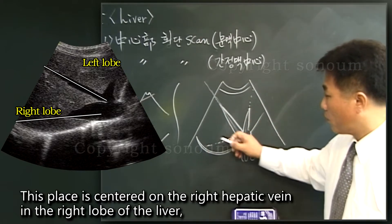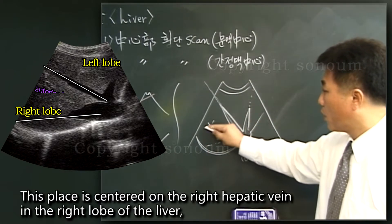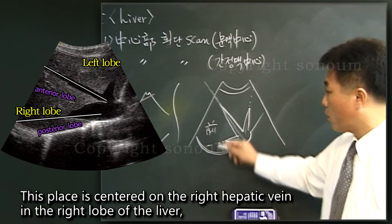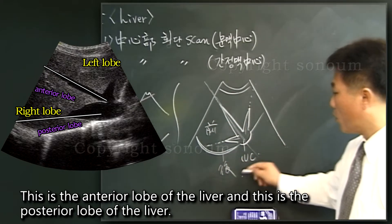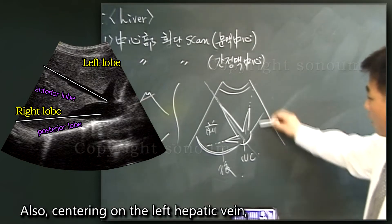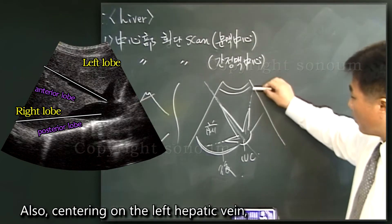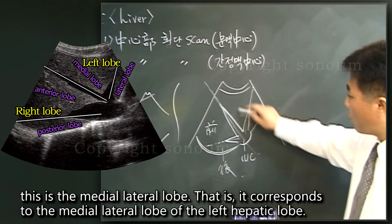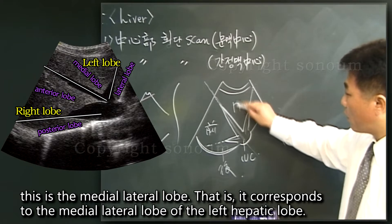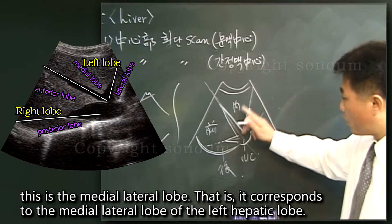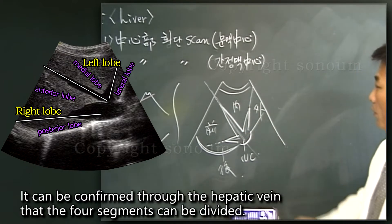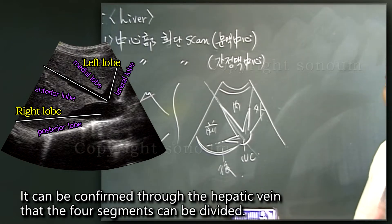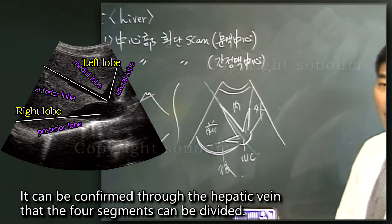This place is centered on the right hepatic vein, in the right lobe of the liver. This is the anterior lobe of the liver, and this is the posterior lobe of the liver. Centering on the left hepatic vein, it corresponds to the medial and lateral lobe of the left hepatic lobe. This is the lateral lobe. It can be confirmed through this hepatic vein that it can be divided into four zones.